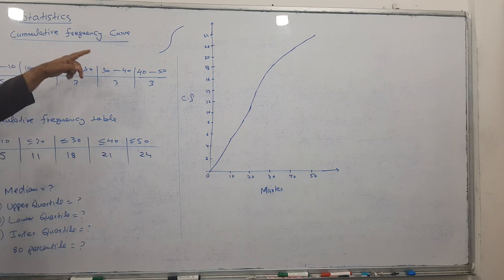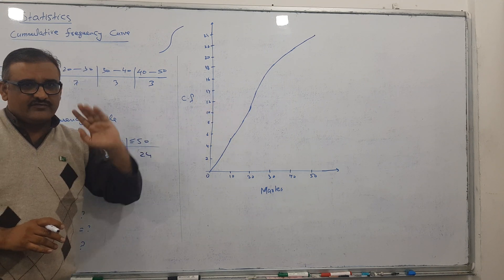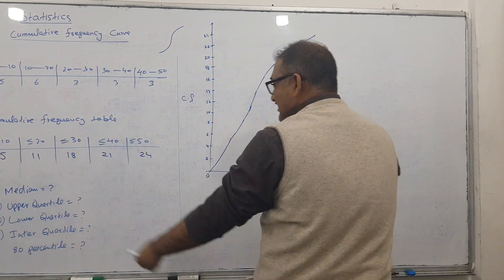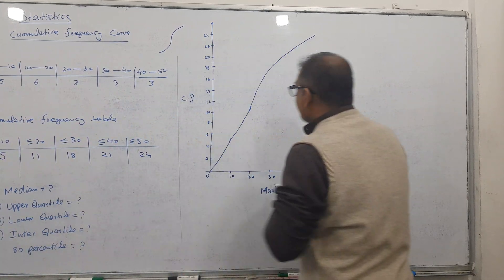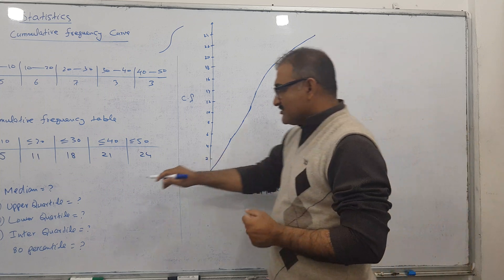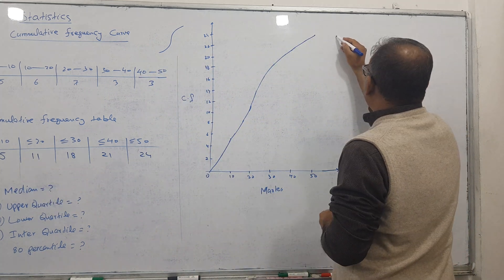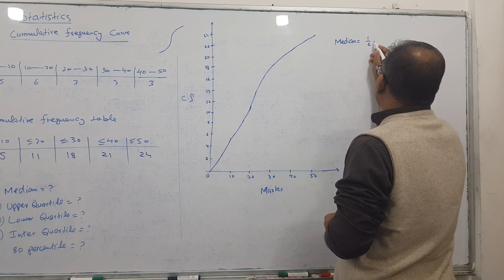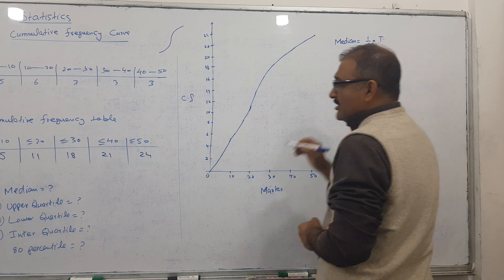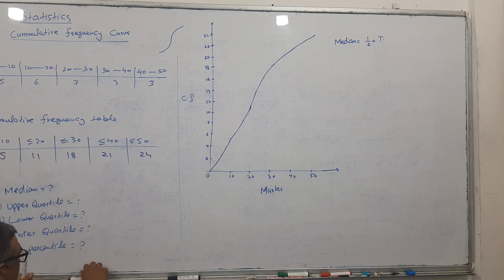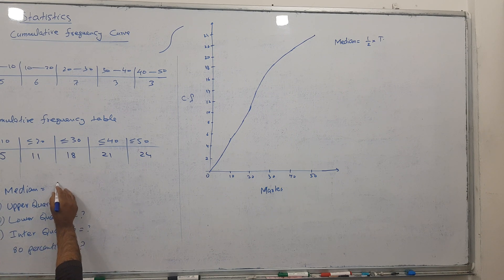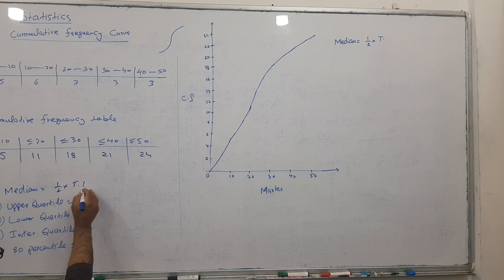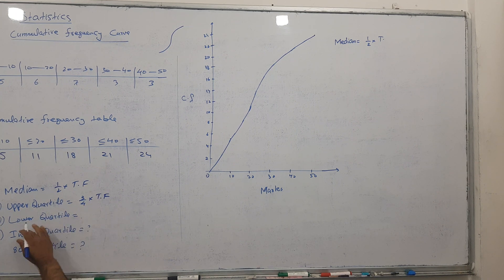This is called a cumulative frequency curve. Now I can find the required values. The formulas are: Median = ½ × total frequency; Upper Quartile = ¾ × total frequency; Lower Quartile = ¼ × total frequency; and Interquartile Range = Upper Quartile minus Lower Quartile.